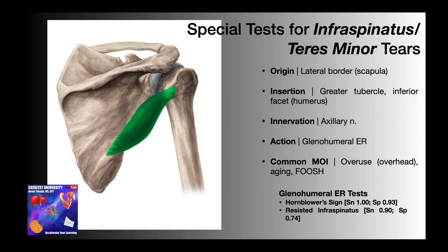This is the teres minor muscle. This muscle originates off of the lateral border of the scapula and also inserts onto the greater tubercle of the humerus, but this time it's the inferior facet of the greater tubercle. Like the deltoid muscle, it is innervated by the axillary nerve, and it also performs glenohumeral external rotation like the infraspinatus.